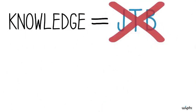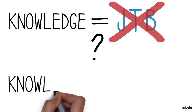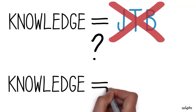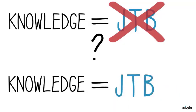If it doesn't work to analyze knowledge as justified true belief, what does work? You may have noticed that the Gettier cases we've talked about so far have some features in common, and you might think we could take account of those features and add a simple patch to the JTB analysis to fix it up. But, as we'll see in the next two videos in this series, the problem of deciding what to add to true belief to get knowledge turns out to be surprisingly difficult.